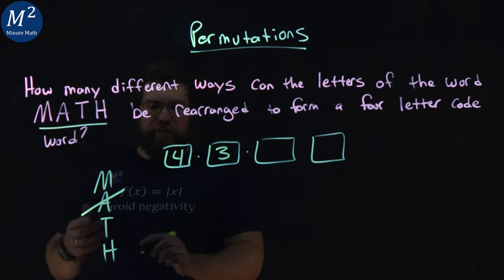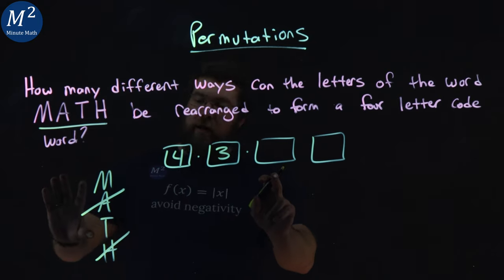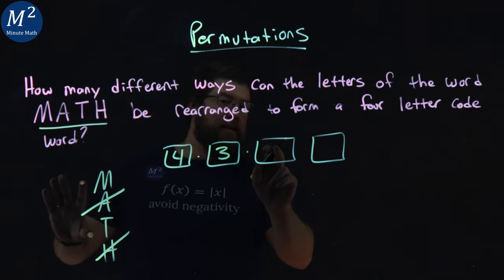Going on here, let's say we choose H. We now have two letters less for the second to last option.